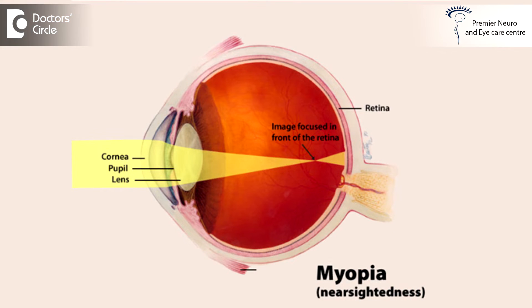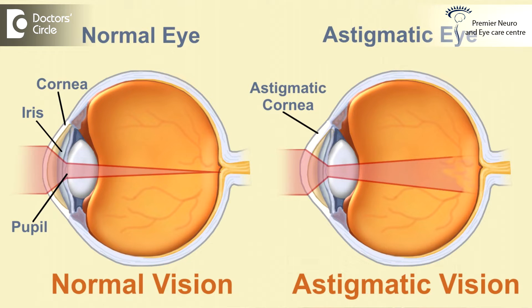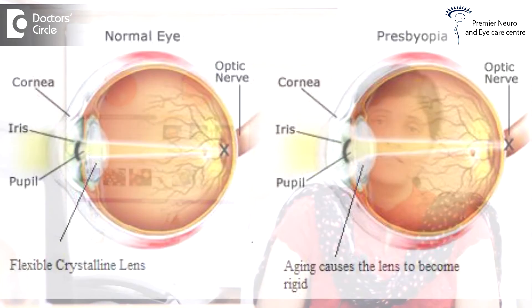LASIK is a laser surgery that practically corrects all types of refractive errors of the eye, with some exceptions. It was originally used to correct short-sightedness or myopia. It can also be used to treat hypermetropia or farsightedness, astigmatism, and now presbyopia can also be treated, including post-operative astigmatism that is induced.